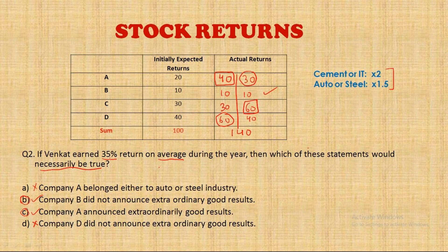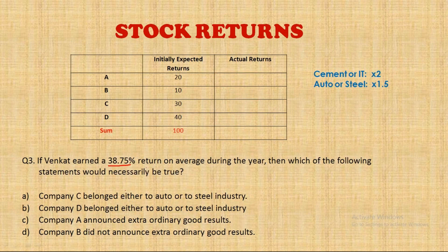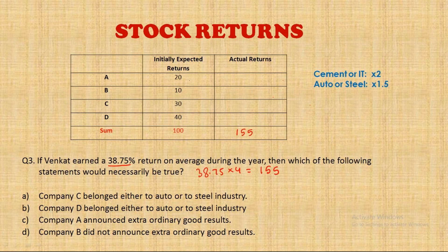The third question gives an average return of 38.75, so 38.75 × 4 = 155 is the overall total return. We need 55 extra rupees. If we double company A (expected 20), we get 20 extra — then we need 35 more from a company at 1.5x, meaning its expected return would need to be 70, which doesn't exist. Company B has no valid combination either.